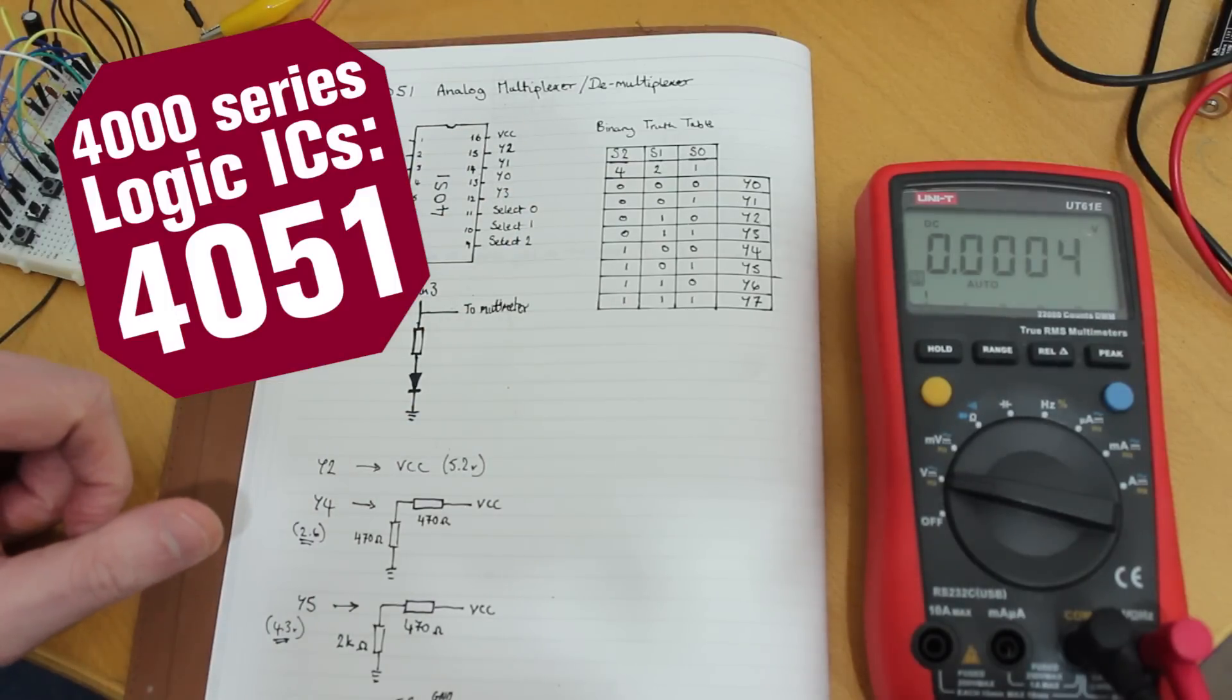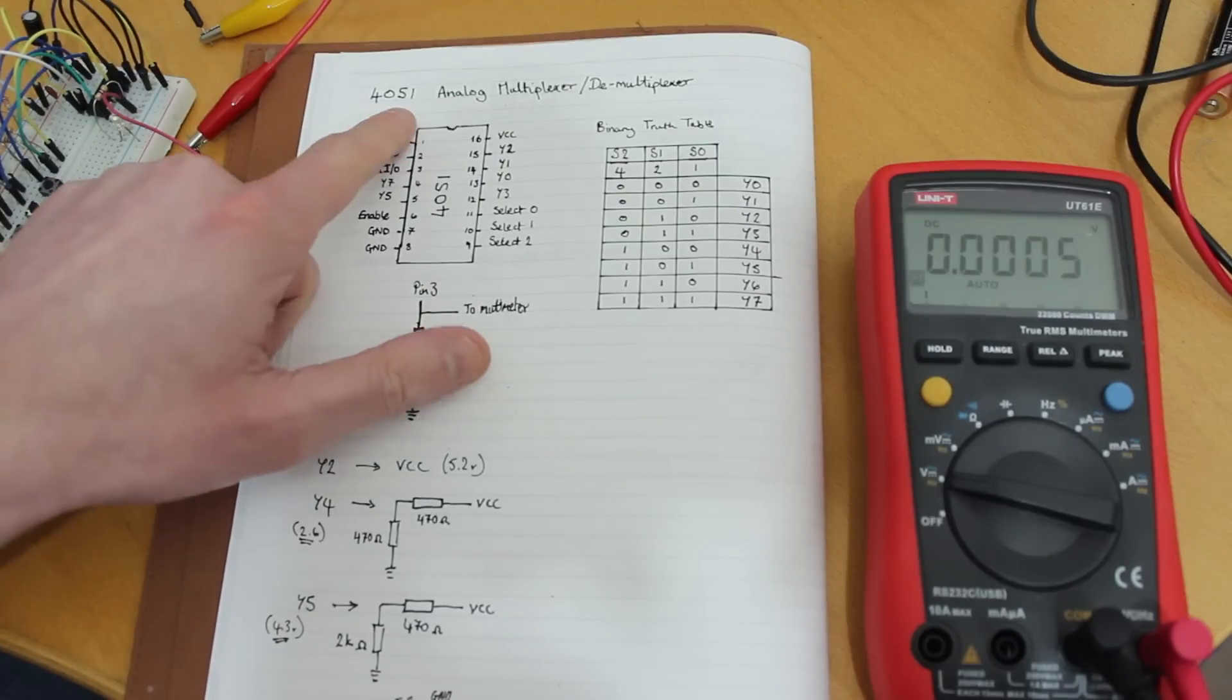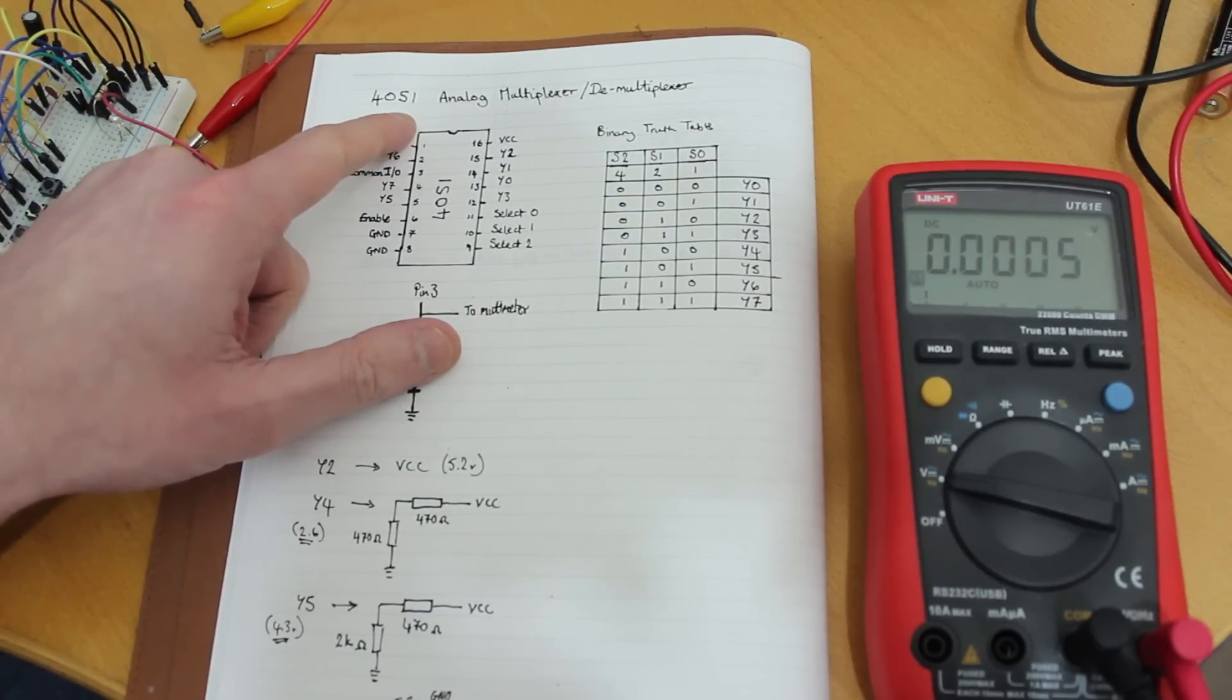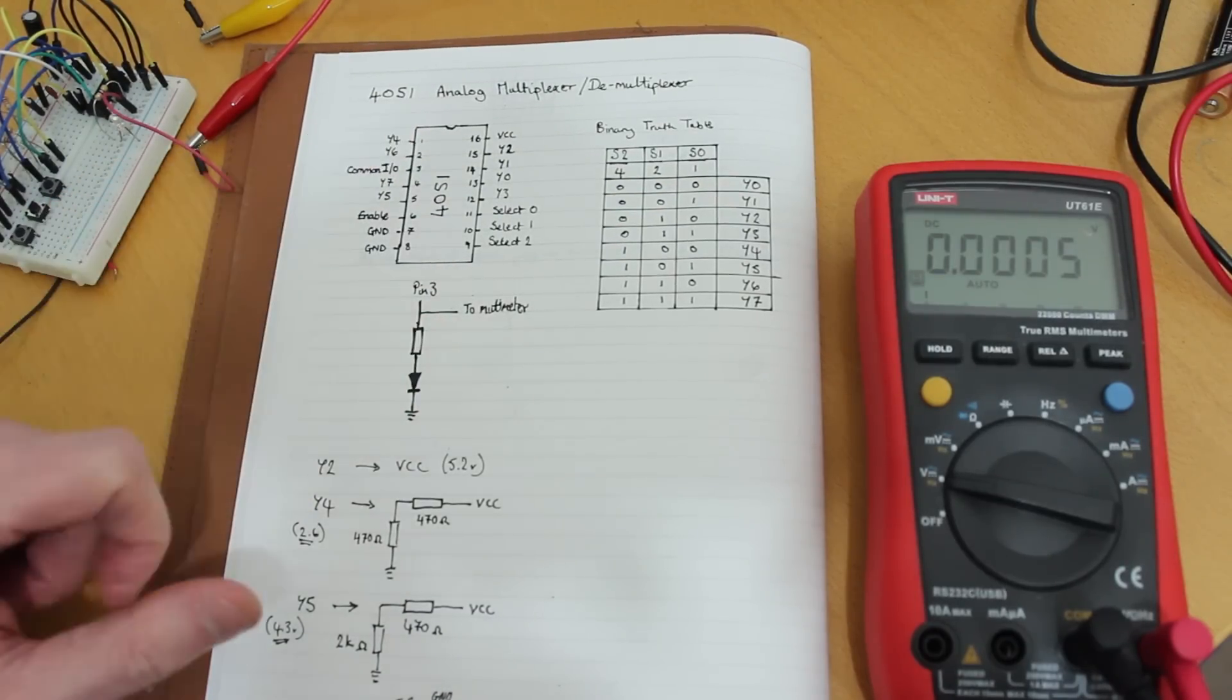Hey guys, welcome back to the 4000 series where we're looking at some of the 4000 series CMOS chips. This one we're looking at is the 4051. It's an analog multiplexer and demultiplexer.